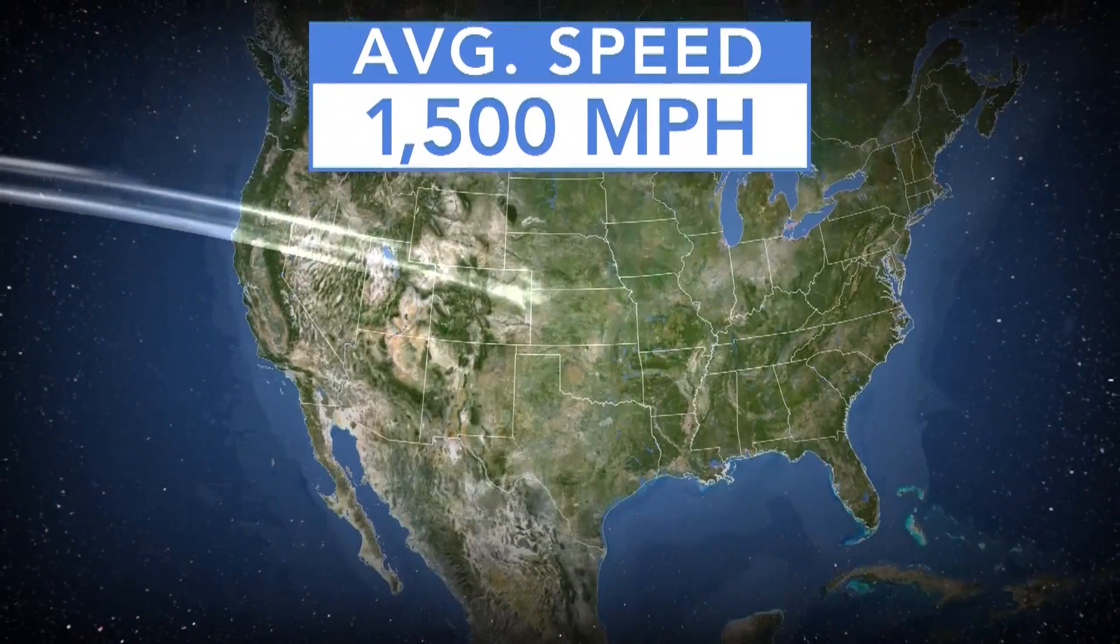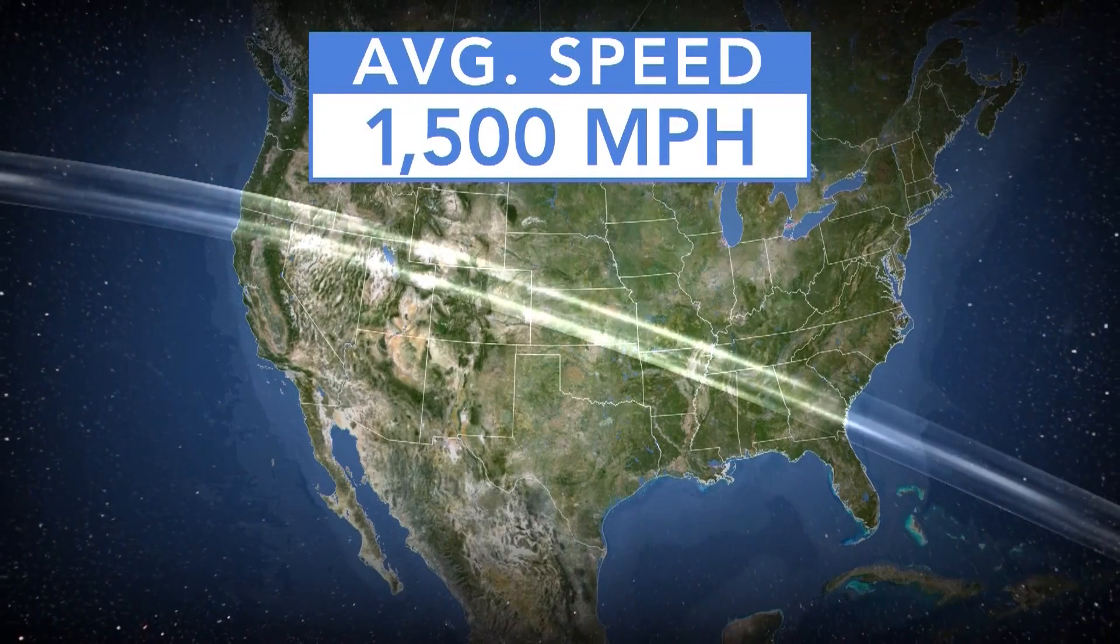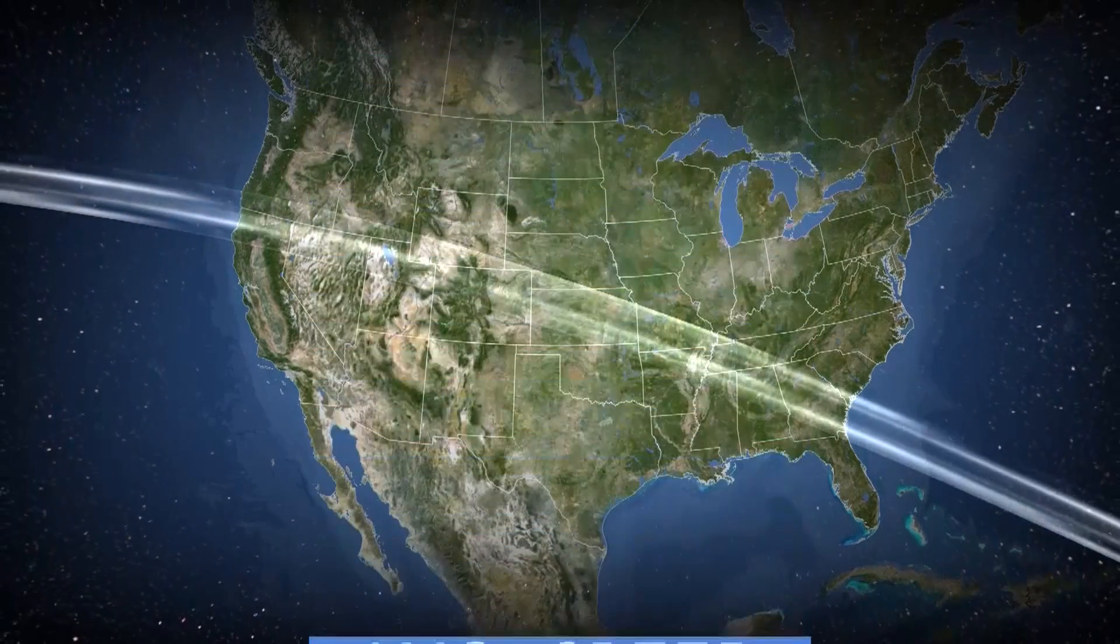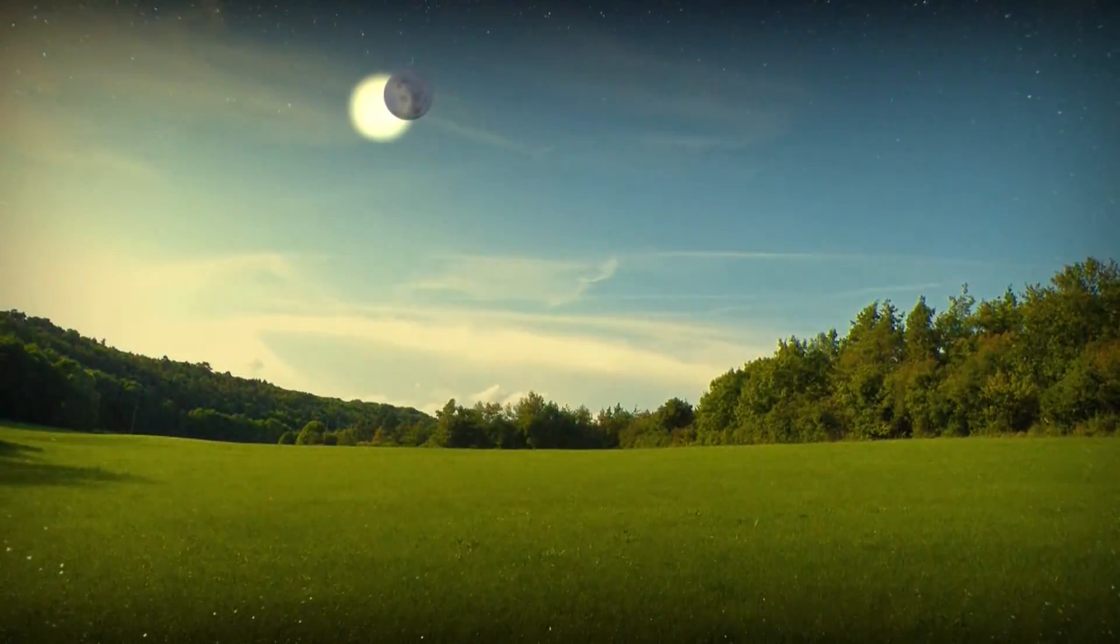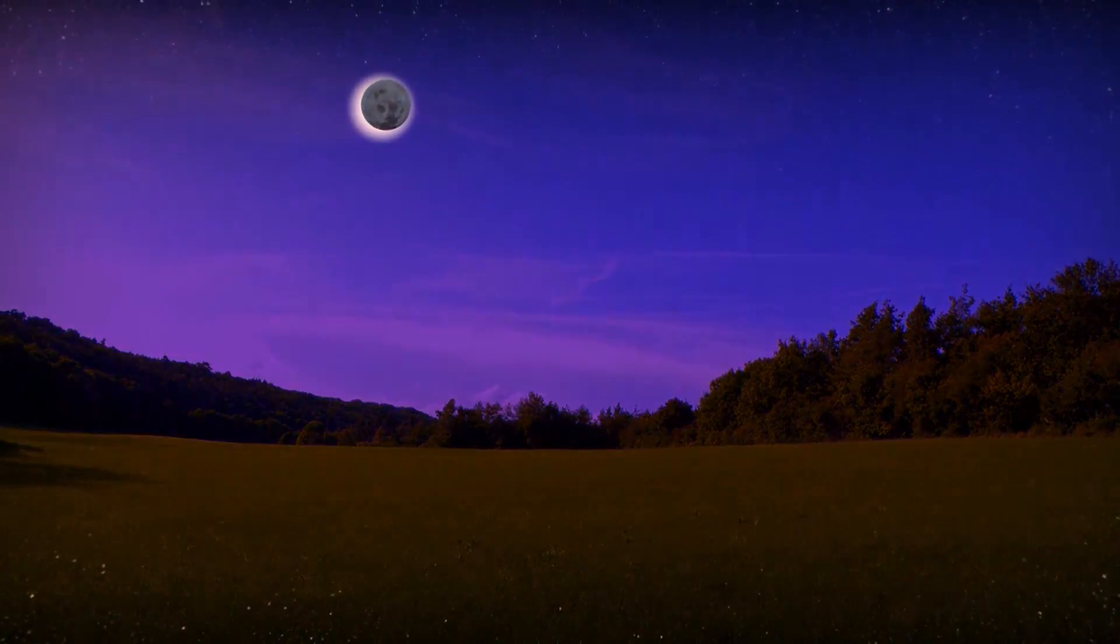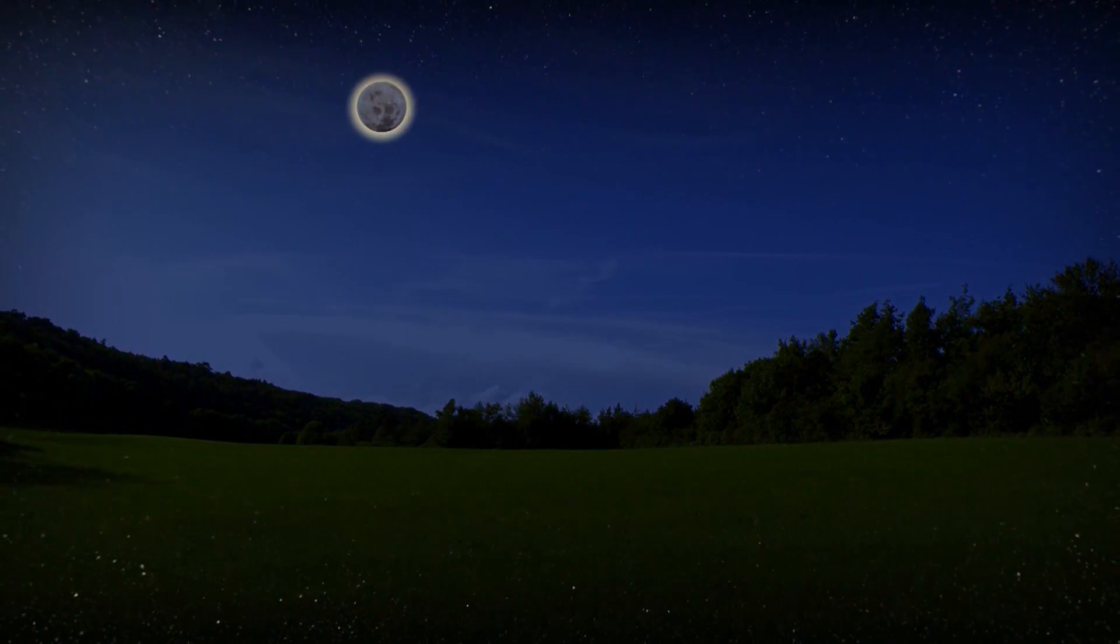Its shadow will race across the country at an average speed of about 1,500 miles an hour, covering a swath roughly 70 miles wide. Day will turn to night and temperatures will drop as much as 25 degrees.